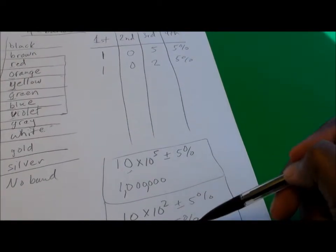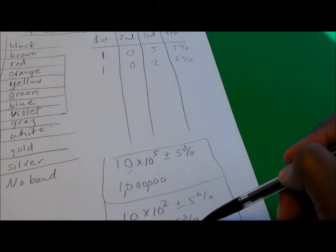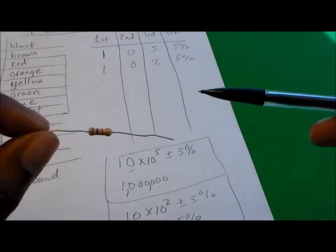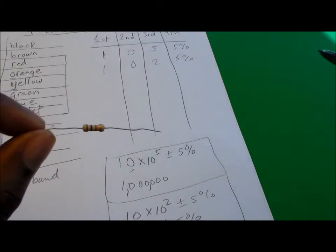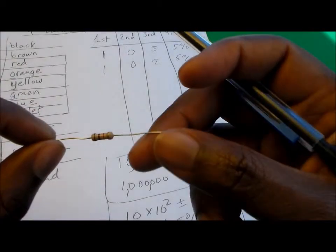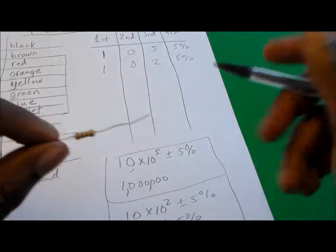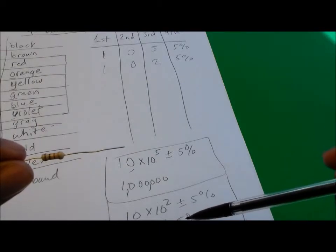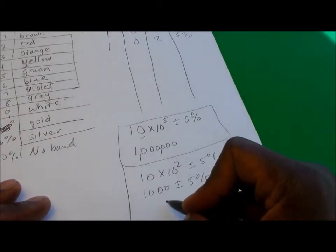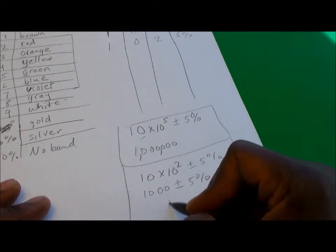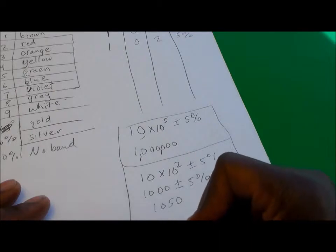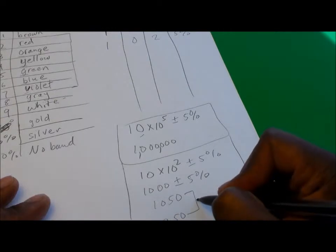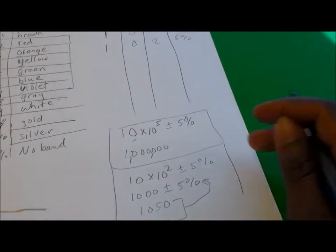The plus or minus 5 percent means that when the manufacturer manufactured this resistor, there was no way to guarantee that it was going to be exactly a 1000 ohm resistor. But what they can guarantee is that it's going to be somewhere between the range of plus and minus 5 percent. That means the maximum value of this resistor could be 1050, and the minimum value could be 950, so somewhere in between there this 1000 ohm resistor will be.